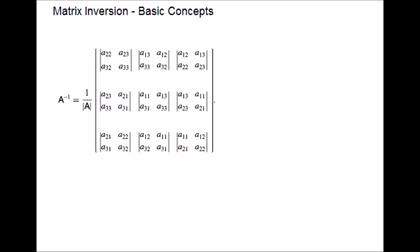In finding the inverse of a matrix we use minors, cofactors, and adjugate. The other name for adjugate is adjoint. Now let us see what all these minors, cofactors, and adjugate are and how to find these. After that we will learn how to calculate the inverse of a matrix step by step. Only then you will understand the continuity and the connection between all these concepts.